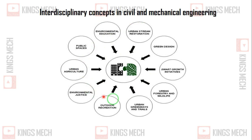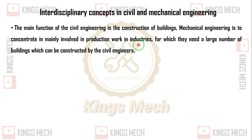This is the importance of applications we are facing with the help of civil and mechanical engineering. Please make a screenshot — it will be useful for your revision. The main function of civil engineering is the construction of buildings. Mechanical engineering is mainly involved in production and working industries, for which they need a large number of buildings which may be constructed by civil engineers.